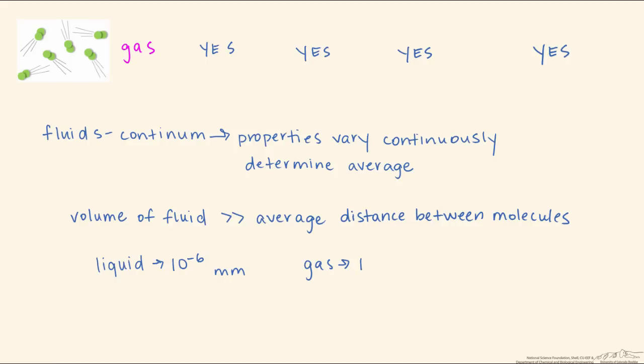For example, if we look at the spacing between molecules for a liquid versus a gas: the spacing is about 10^-6 millimeters for a liquid and 10^-7 millimeters for a gas. If we look in one cubic millimeter of fluids, the number of molecules ranges from 10^18 to 10^21. So their volume is very large compared to the spacing between the molecules.